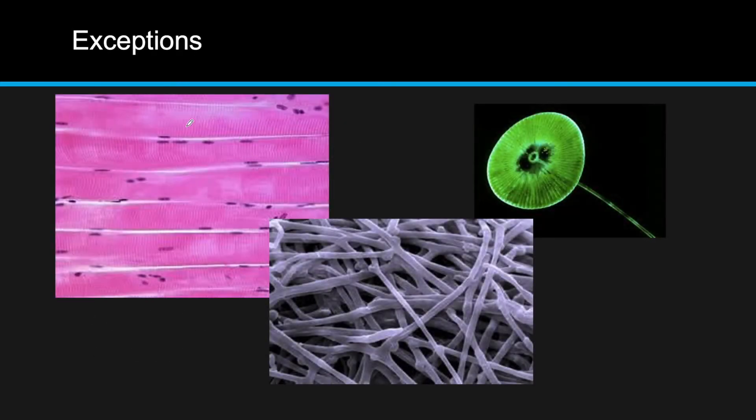The exceptions are striated muscle fibers, aspartate hyphae, and giant algae. You'll see striated muscle fibers where even single cells are multi-nucleated, which goes against the idea of a common cell having only one nucleus.